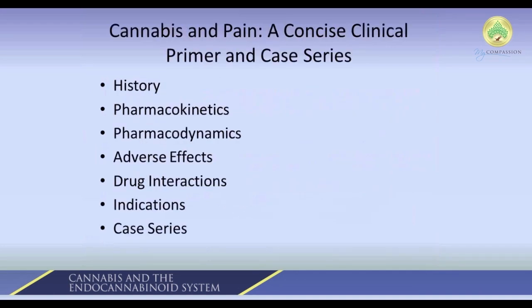This is the outline: we're going to go through a little bit of history, pharmacokinetics, pharmacodynamics, adverse effects, drug interactions, indications, and a case series. This outline closely follows a paper I recently published in the Clinical Journal of Pain, Volume 29, Number 2, 2013 — titled 'Cannabinergic Pain Medicine: A Concise Clinical Survey of Randomized Controlled Trial Results.' You can let the organizers know and I can send you a copy of that paper.